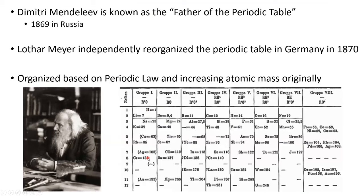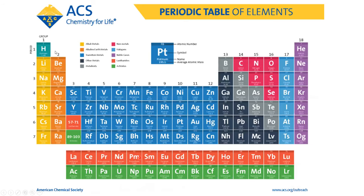Our current periodic table is organized based on atomic number — the number of protons. Mendeleev's was based on atomic mass, but the general details are essentially the same in the sense that each of these groups are based on chemical properties that repeat. You can see hydrogen, lithium, sodium, potassium, rubidium, cesium in his table, and the current one has the same grouping. So we still see that same thing.